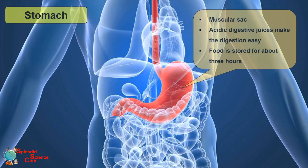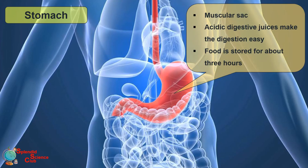The stomach is a muscular sac. Digestion is efficient due to the acidic nature of the digestive juices there. Food is stored in the stomach for about three hours, and then digested further by mixing with digestive juices.